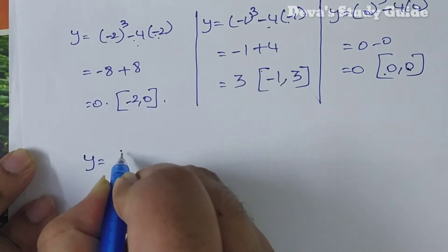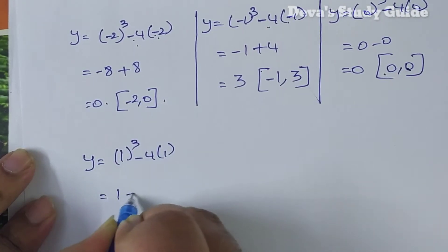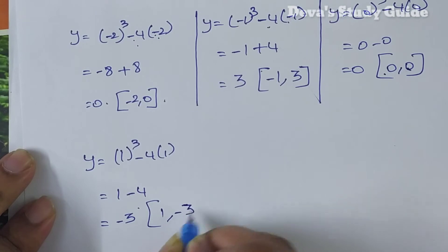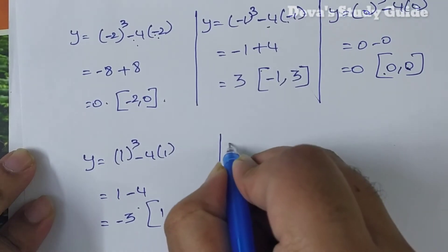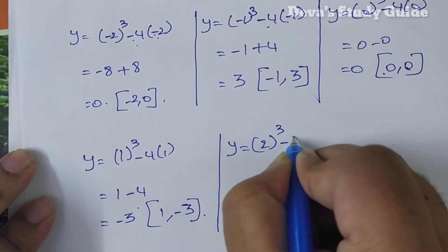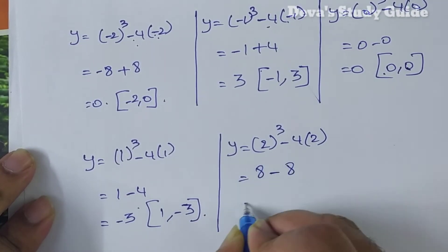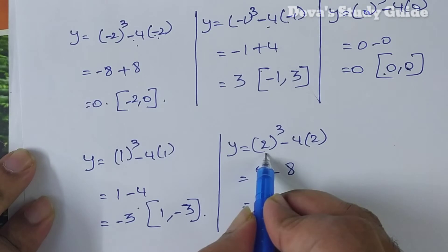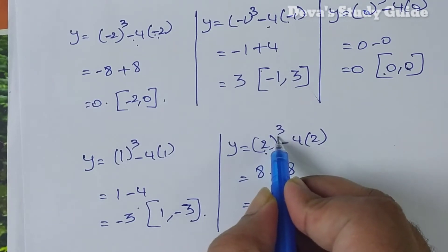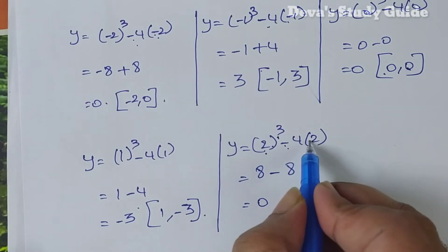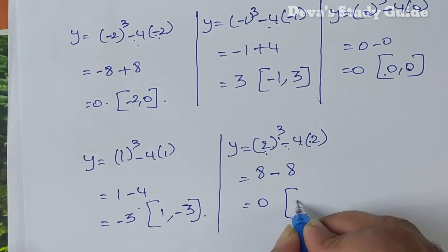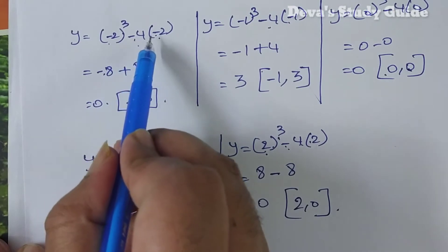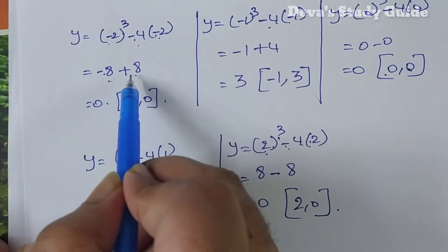For x equals 1: 1 cube minus 4 into 1 equals 1 minus 4 equals minus 3. For x equals 2: 2 cube minus 4 into 2 equals 8 minus 8 equals 0. Cross check: minus 2 cube is minus 8, minus into minus plus 8, equals 0.